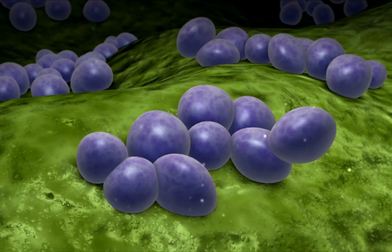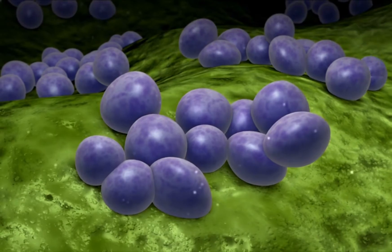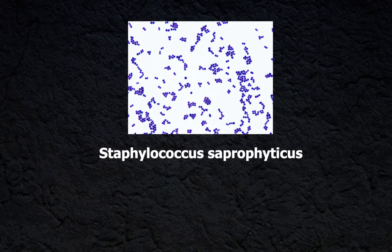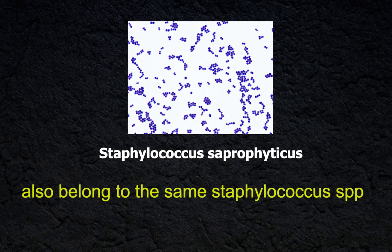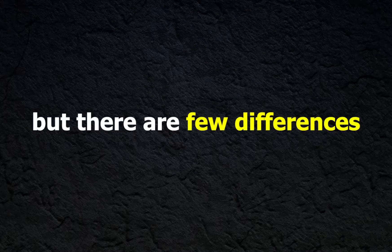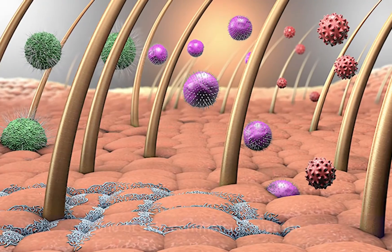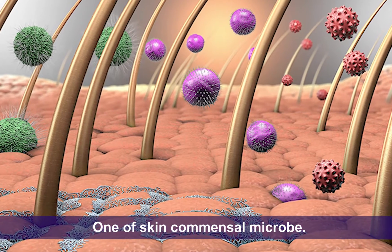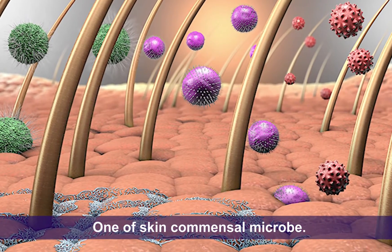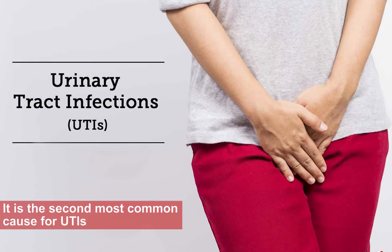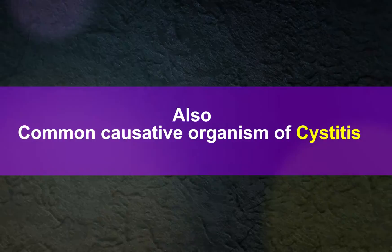Hope you all know about Staphylococcus. Staphylococcus saprophyticus belongs to the same Staphylococcus species but there are a few differences. Staphylococcus saprophyticus is one of the common skin commensal microbes; however, it is the second most common cause of urinary tract infection in females between the ages of 17 to 27.